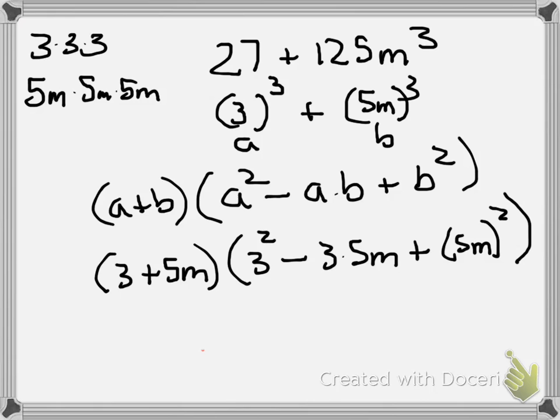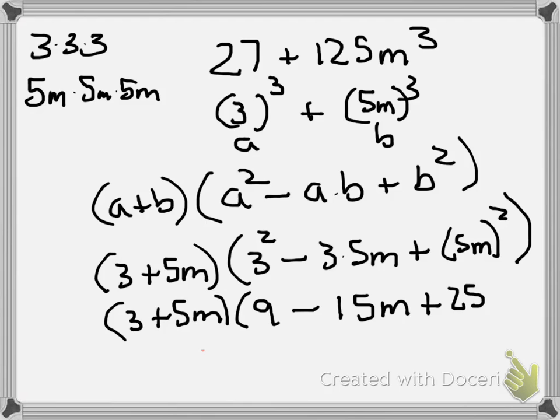So to simplify, there's nothing else we can do with 3 plus 5m, so we rewrite it. Well, 3 squared, 3 times 3 is 9, subtract 3 times 5m is 15m, and 5m squared, well 5 times 5 is 25, m times m is m squared, and you're done. That's factoring the sum of two cubes.